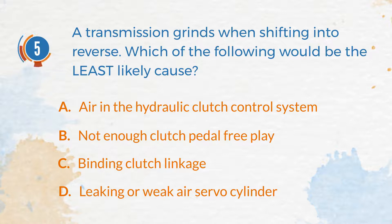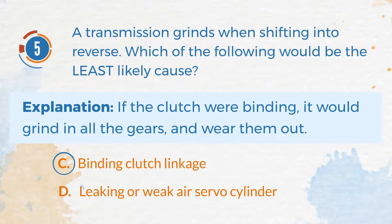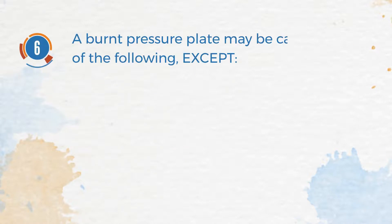The correct answer is C: Binding clutch linkage. Explanation: If the clutch were binding, it would grind in all the gears and wear them out. Number 6. A burnt pressure plate may be caused by all of the following, except.